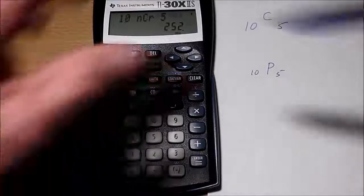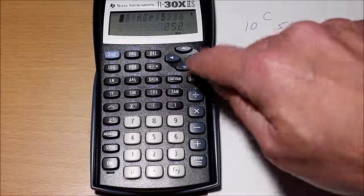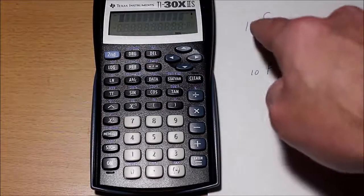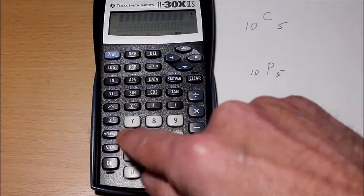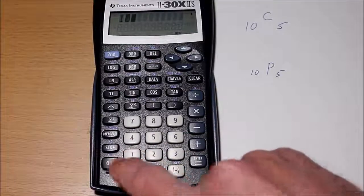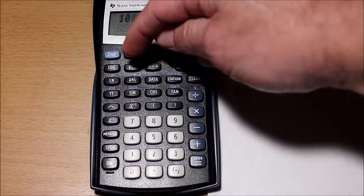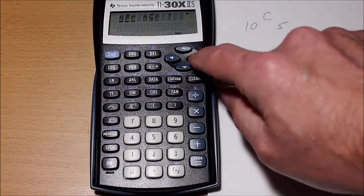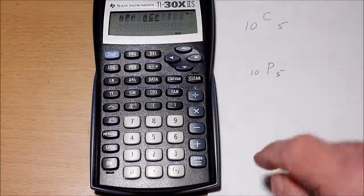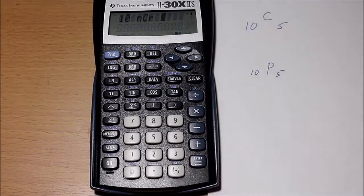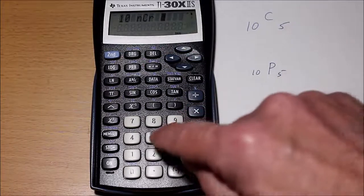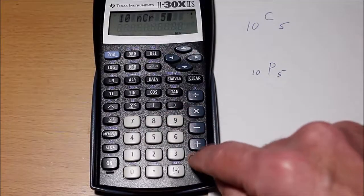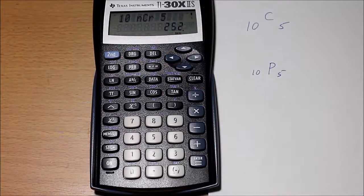So the way we do it is, to do the combination, you type in 10. And then this PRB button here, you hit the PRB, and you scroll over using the arrows to this nCr and hit equals. And then you put in the last number, the 5. And then you hit enter, and that's 252.